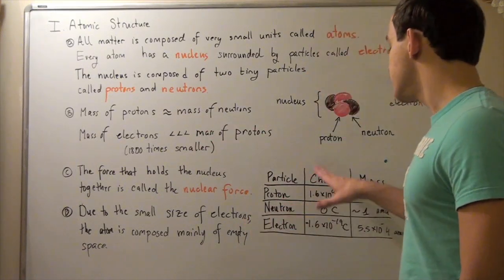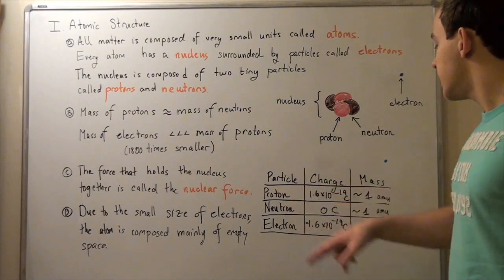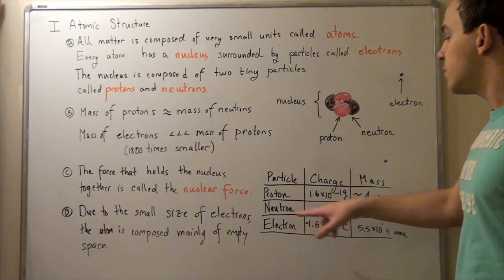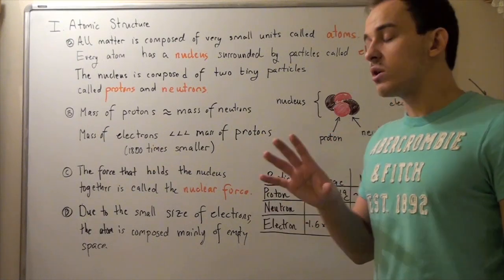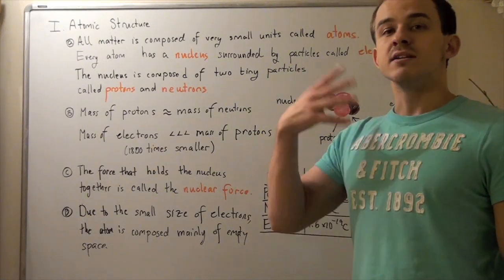Now if we look at this table and we look at their masses, a proton has one amu. A neutron has one amu. Now amu is simply atomic mass unit. We're going to discuss that in detail in another lecture.